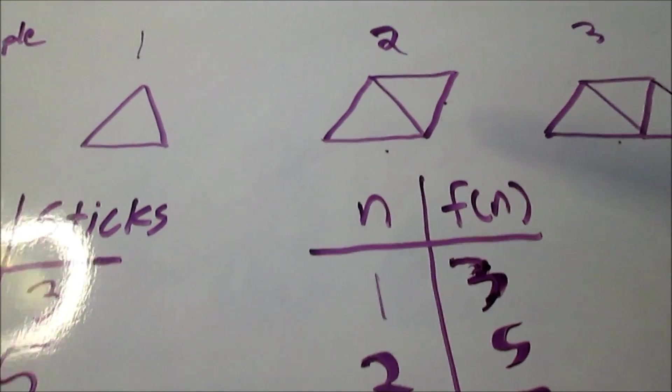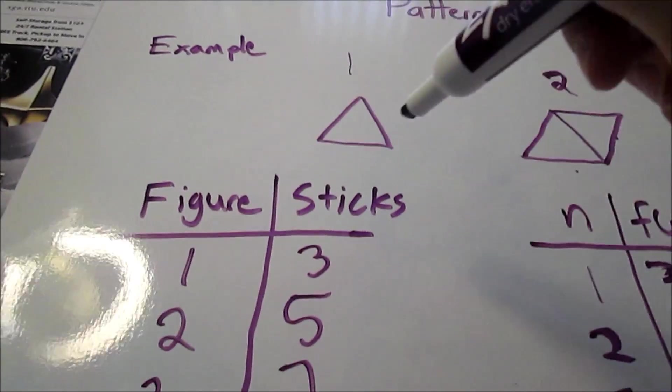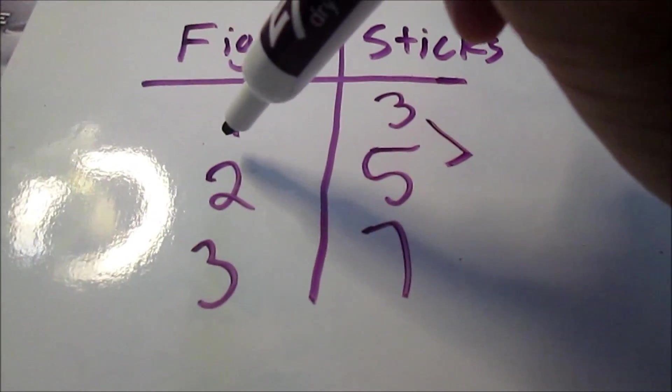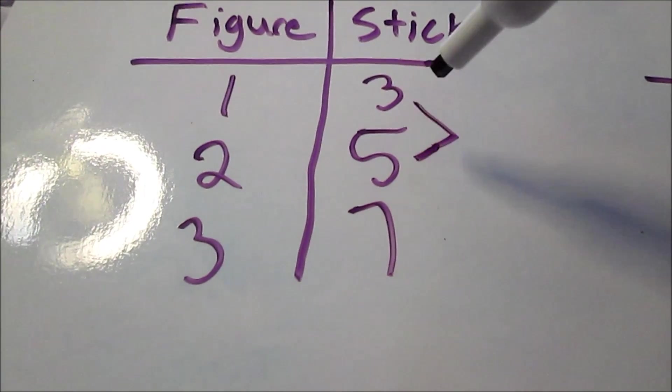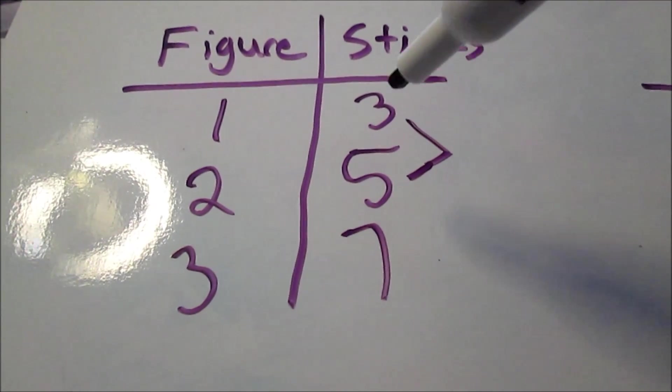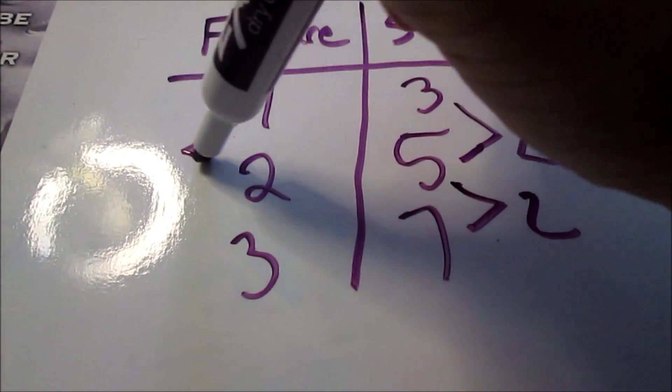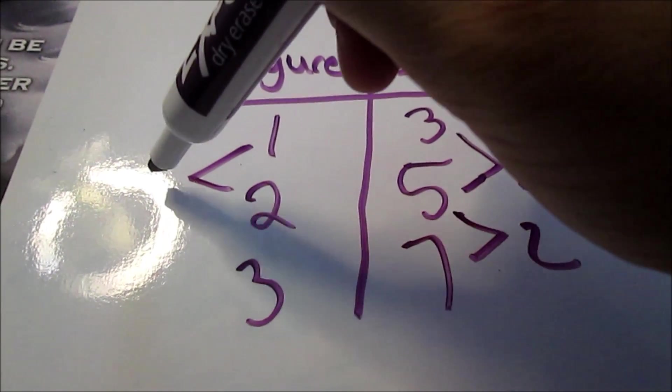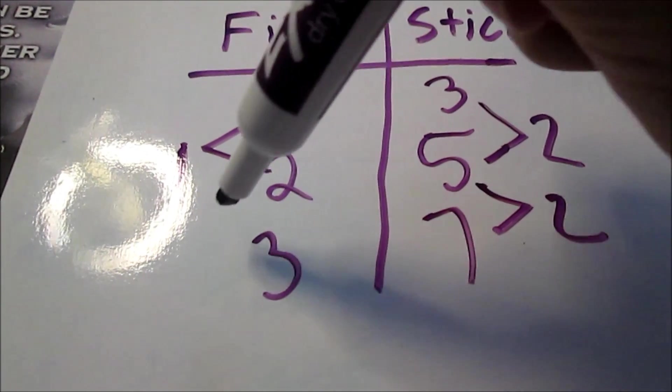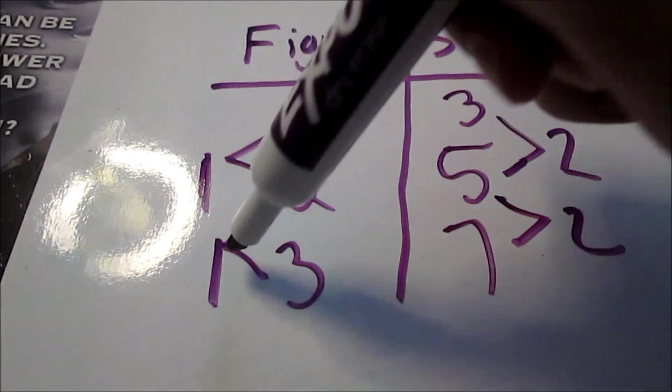Now here's the part about finding rules. I look at the pattern, then I find the rule. I use my table to find the rule. What I did first was I marked this little arrow to show the change from stick number. From 3 to 5, that's a change of 2. 5 to 7, that's a change of 2. On the left, 1 to 2, this is the change in the figure number. That's only a change of 1. What this means is from figure 1 to figure 2, it just increased by 1. From 2 to 3, it increases by 1.